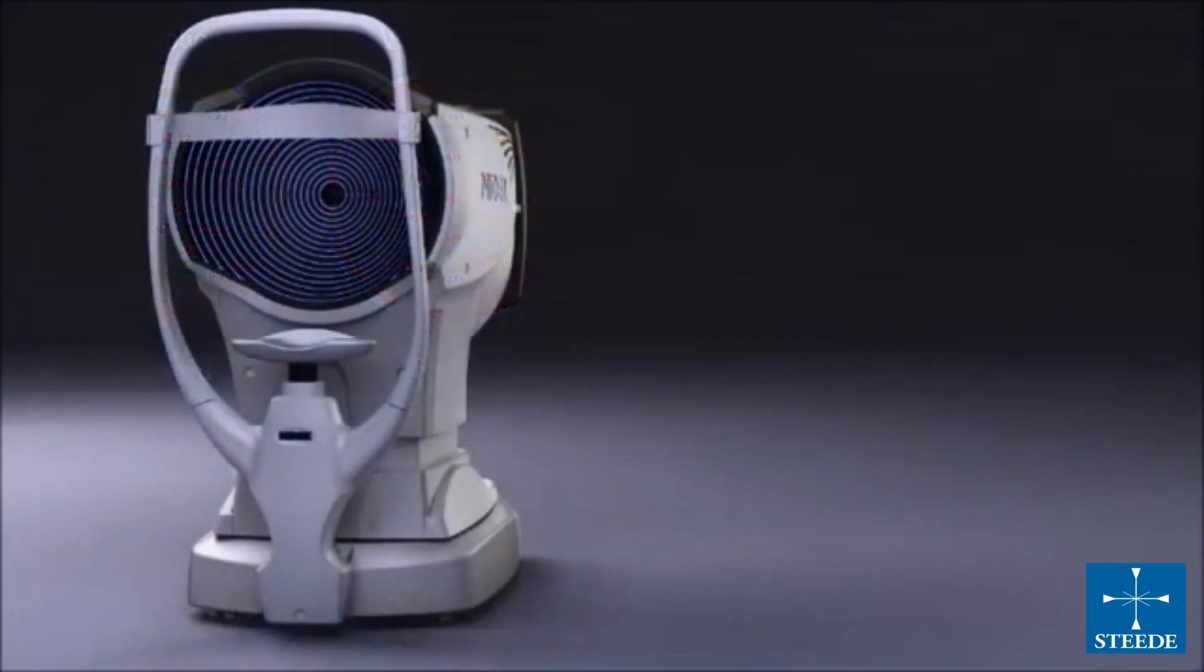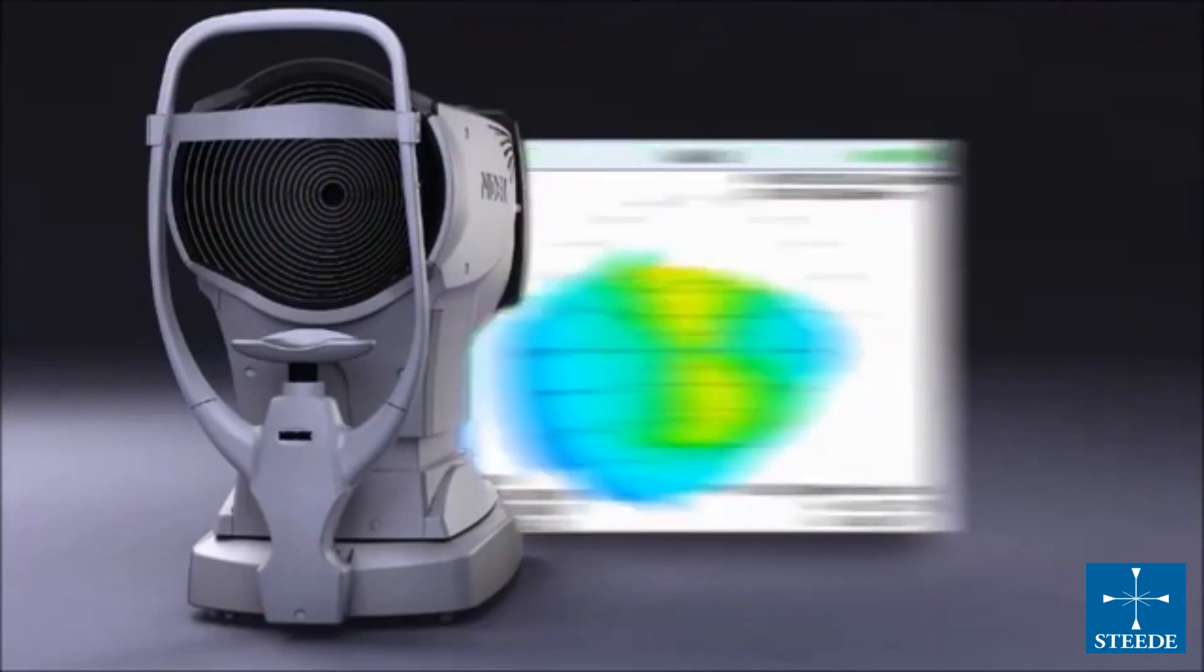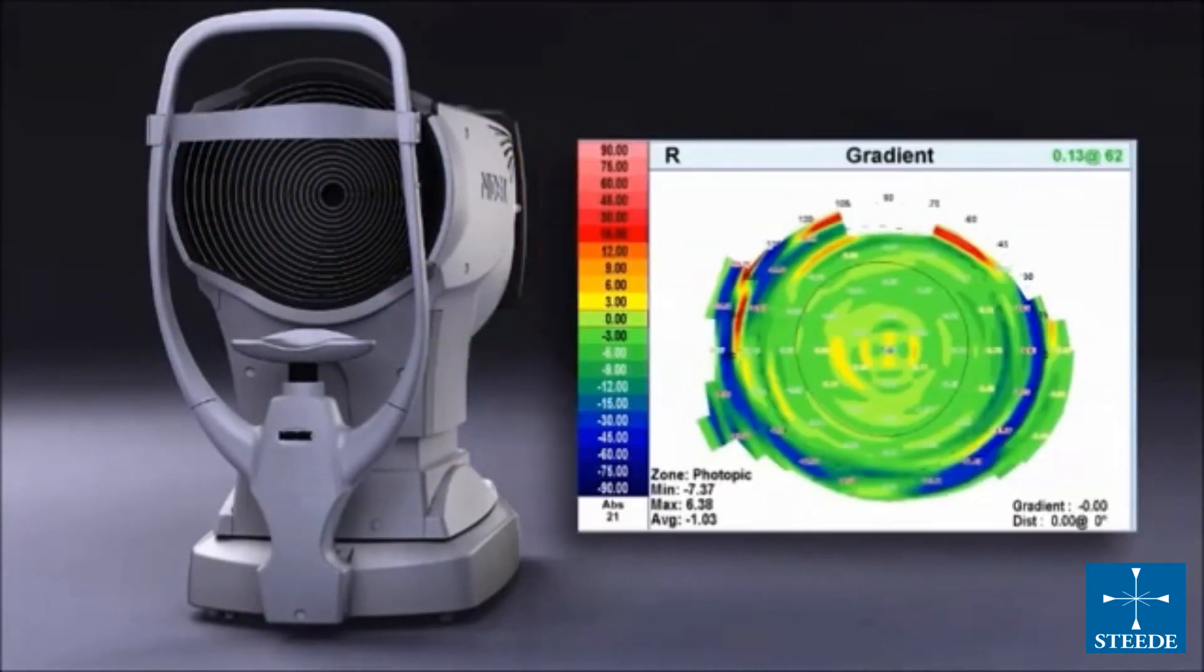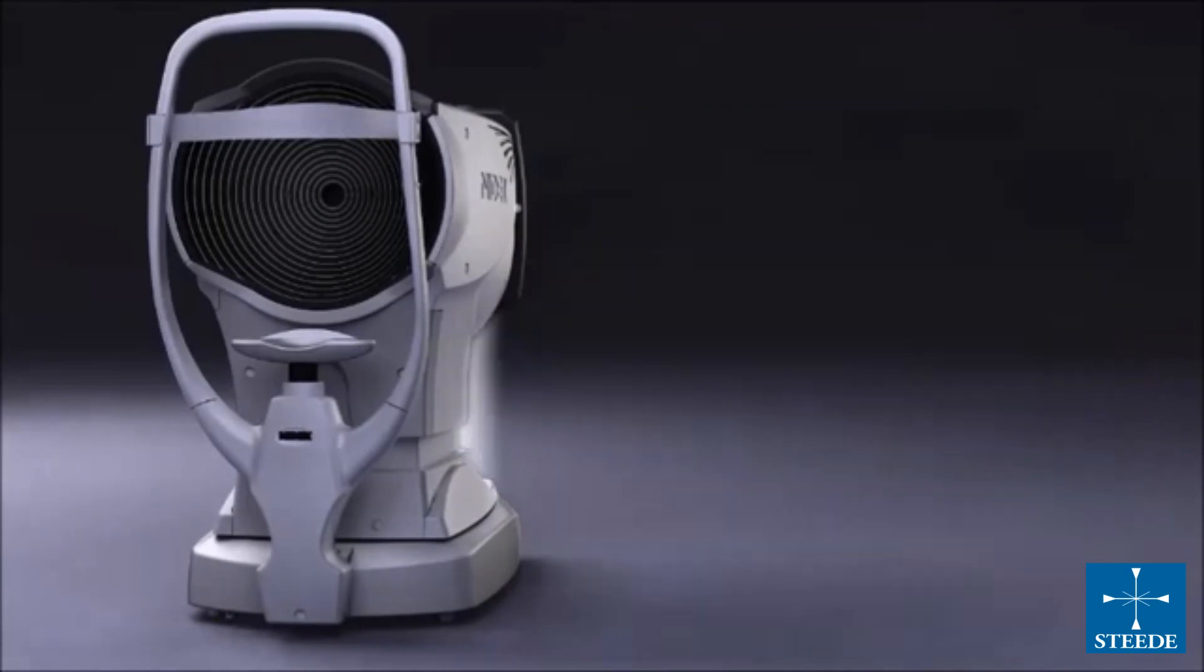The blue light corneal topography provides you with keratometry, photopic pupil, axial, instantaneous, tangential, gradient, Zernike graphs, and elevation maps.